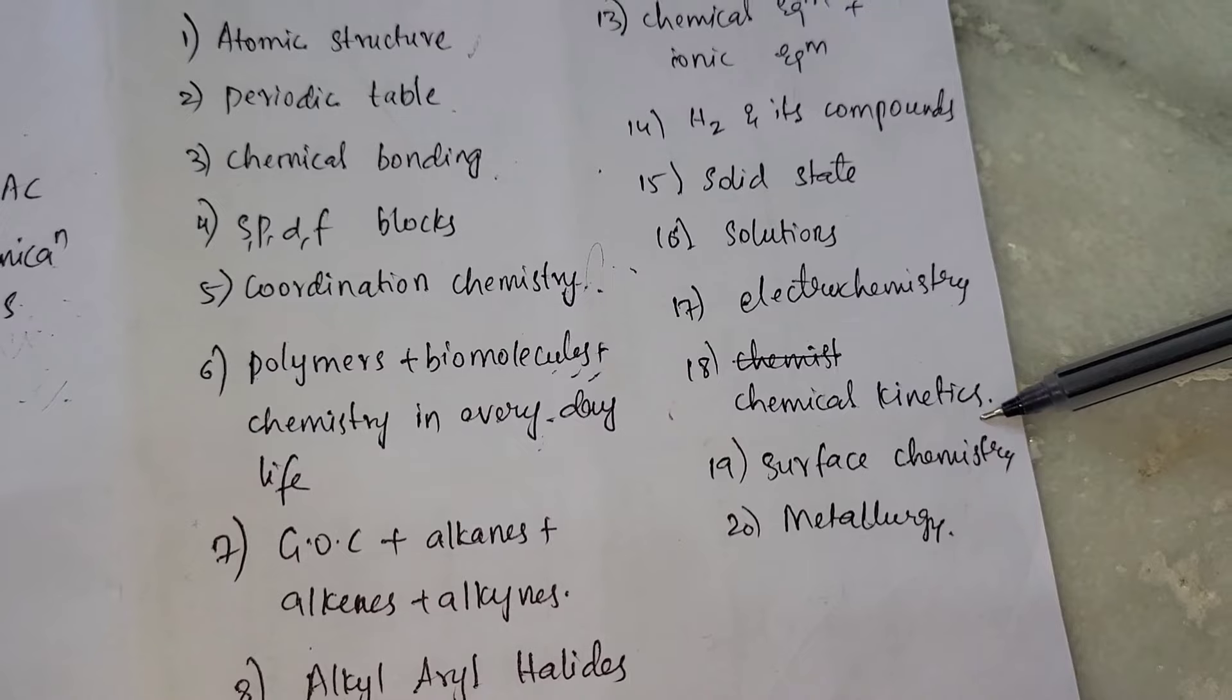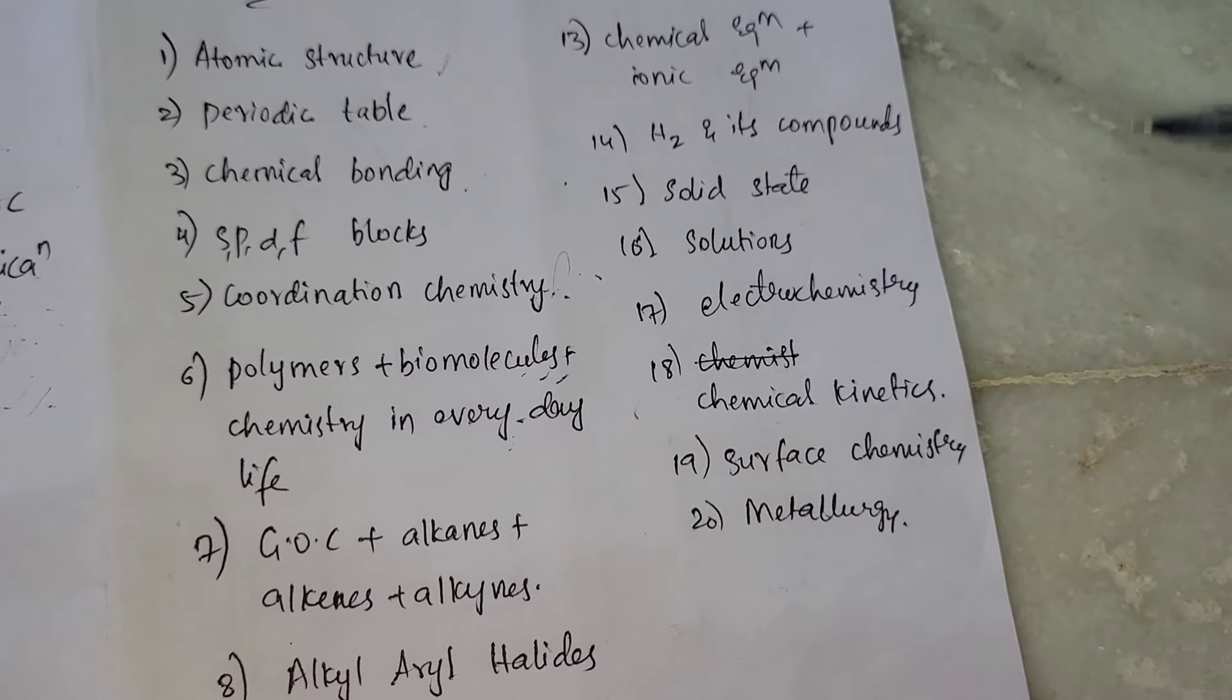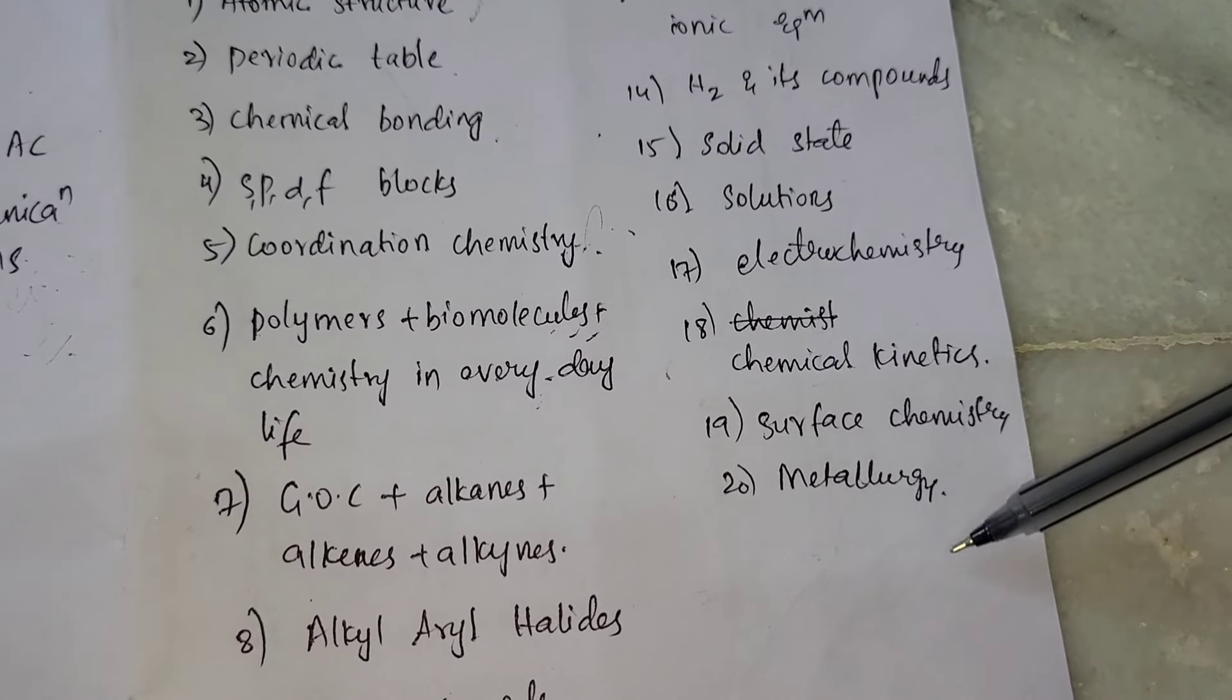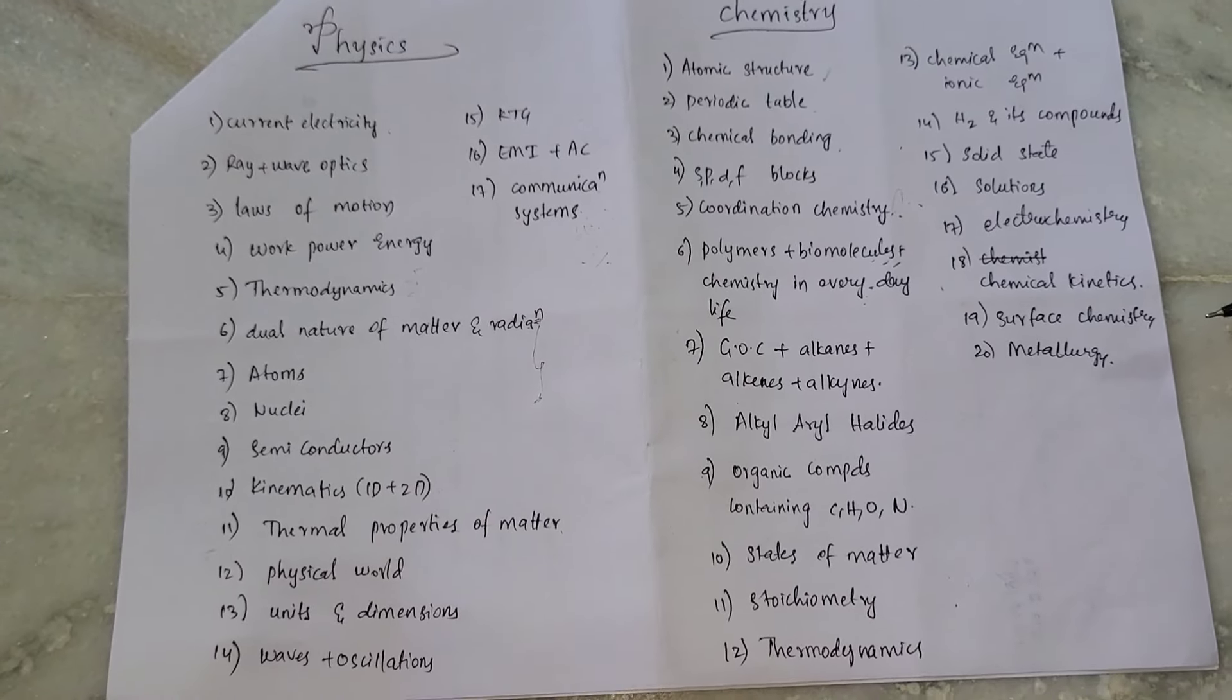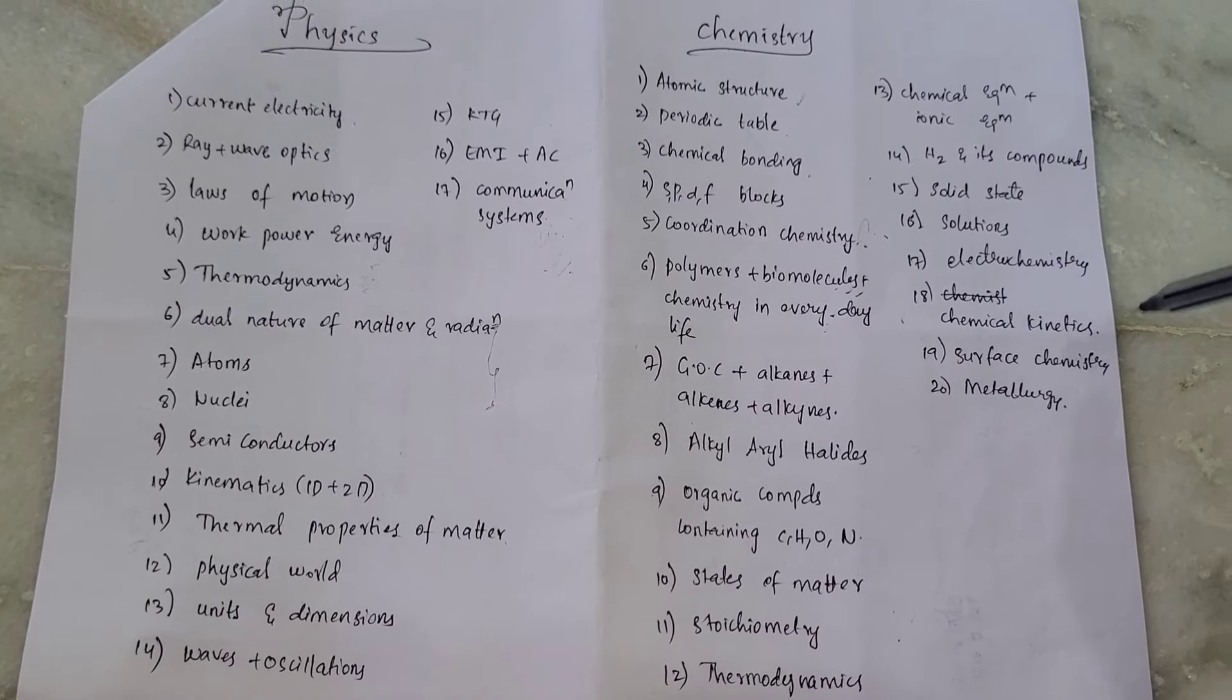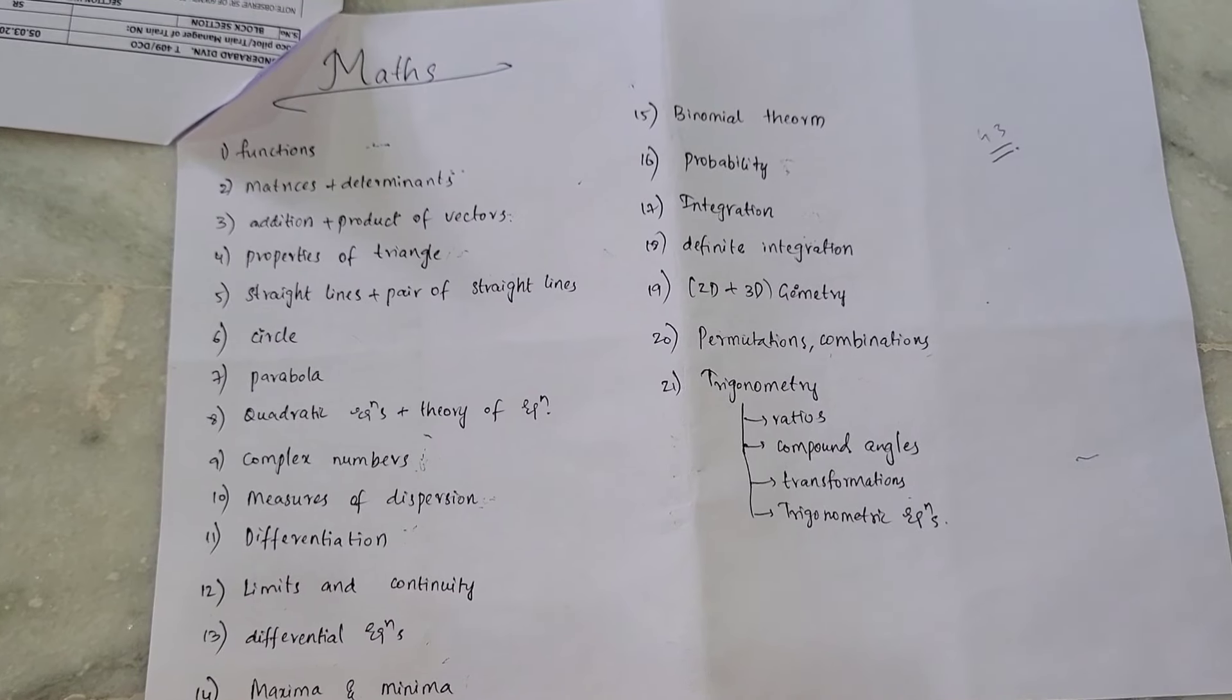Electrochemistry - you can try and do it, in case it's tough you can leave it. Next, chemical kinetics - element decay, if 99% decay, you can use basic shortcuts. Surface chemistry. Next, metallurgy. These are the physics and chemistry chapters and math chapters.